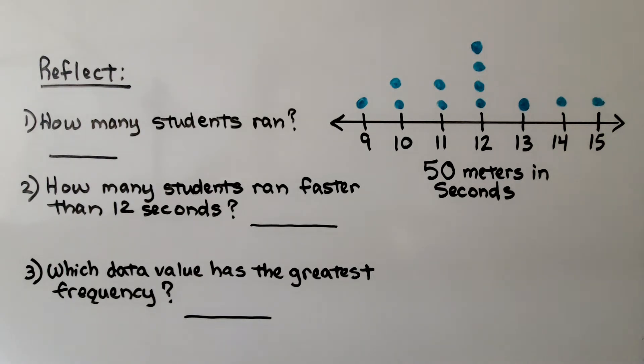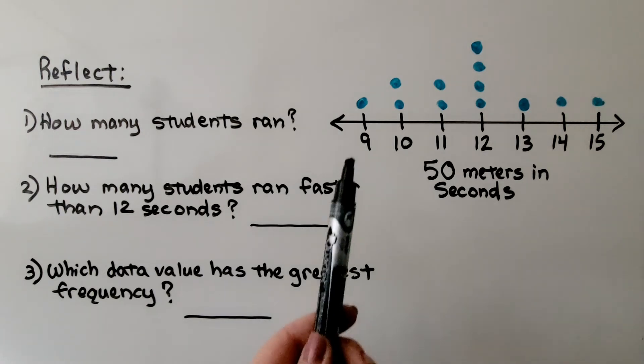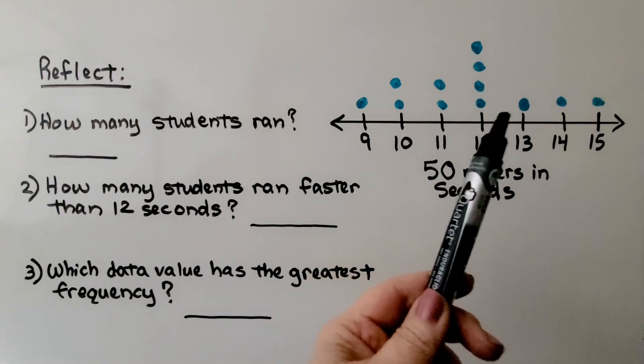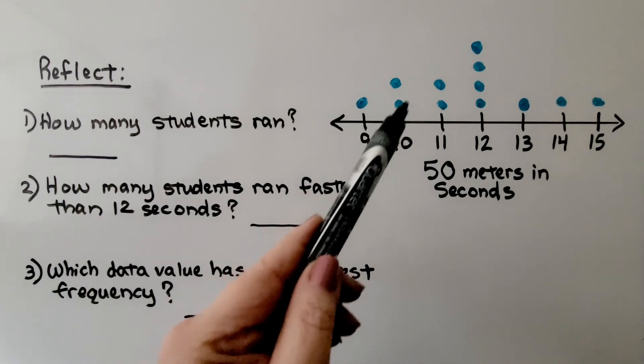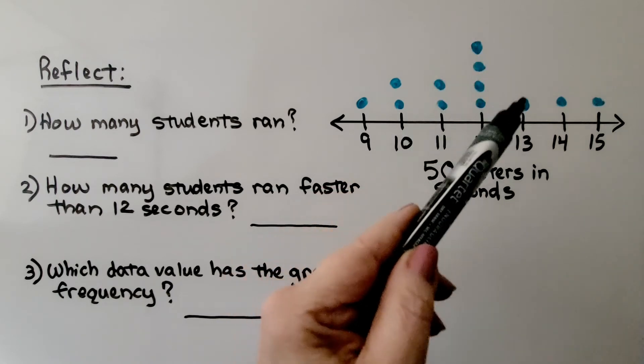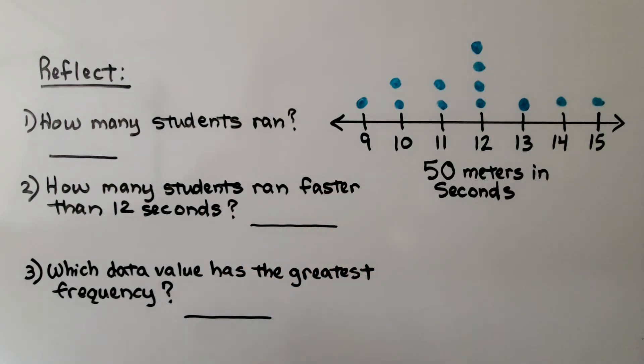How many students ran? Well, we had the data values and one dot represented each student running. We can count the dots: 1, 2, 3, 4, 5, 6, 7, 8, 9, 10, 11, 12. Twelve students ran and were timed.